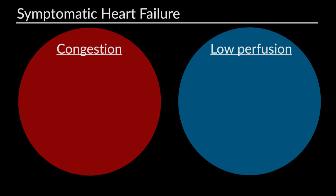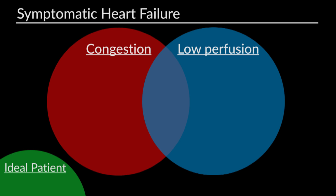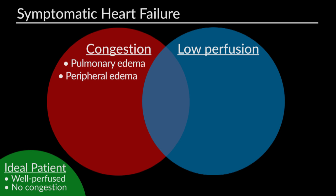Another consideration is how patients present with symptoms. For patients with symptomatic heart failure, treatment must be focused on what type of symptoms they present with — be it congestion, low perfusion, or a combination of both. The ideal patient presents well-perfused with no evidence of congestion, and no treatment is warranted at that time. In contrast, patients who present with good perfusion but with evidence of congestion — pulmonary edema, peripheral edema, or ascites — may benefit from treatment.